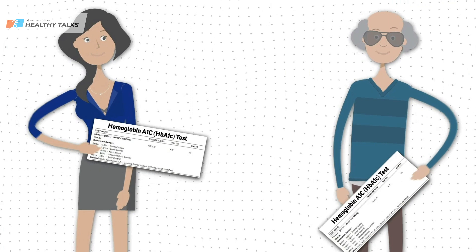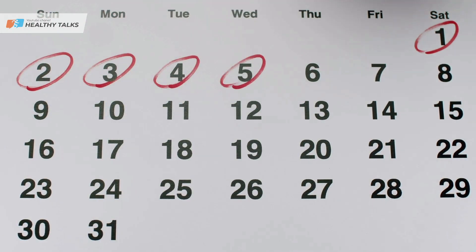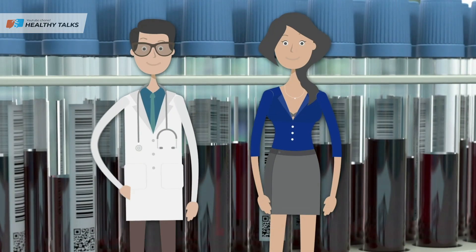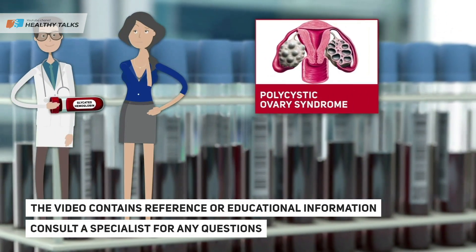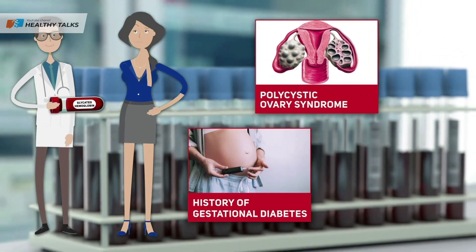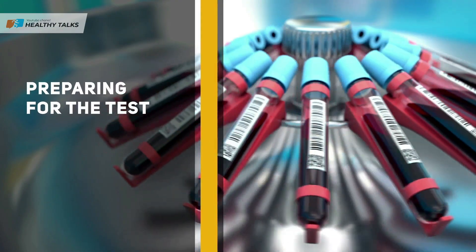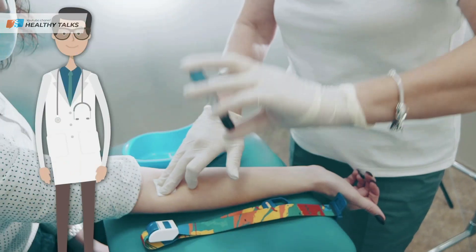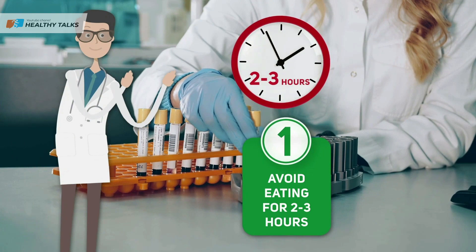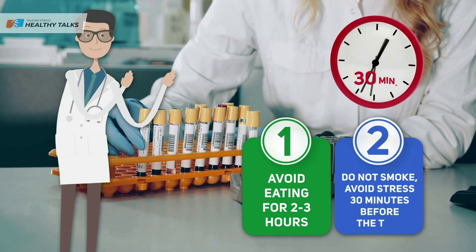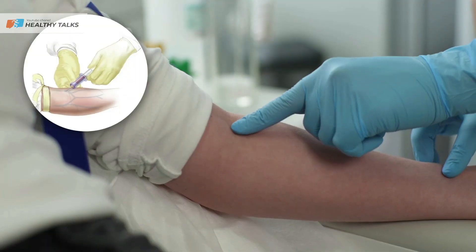The results of this study are interpreted equally for men and women regardless of age. The menstrual cycle does not affect the result, so the test can be taken at any period. Women may be recommended for this study given the presence of polycystic ovary syndrome, a history of gestational diabetes, or the birth of a baby heavier than four kilograms. For more accurate results, refrain from eating for two to three hours before taking blood, and for 30 minutes before the study do not smoke, and do not overexert yourself physically or emotionally. Blood is drawn from a vein.